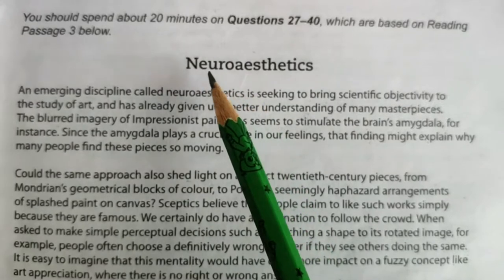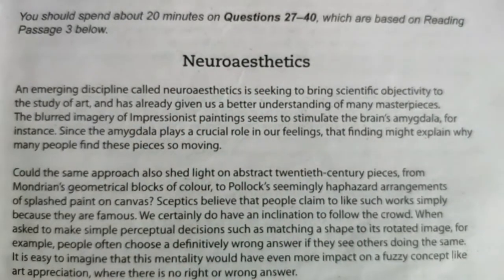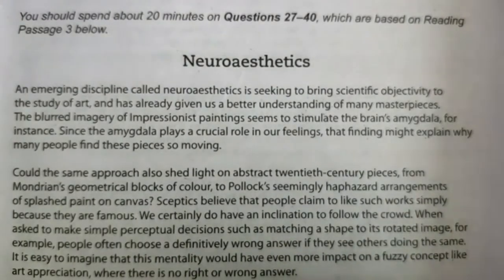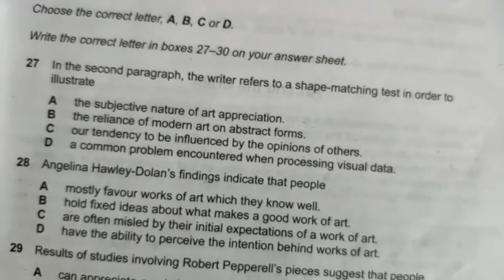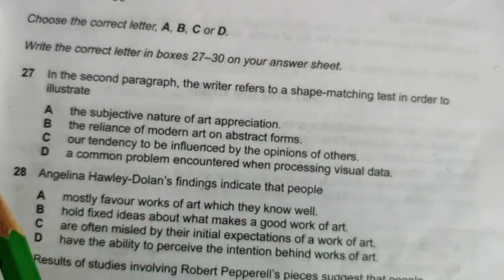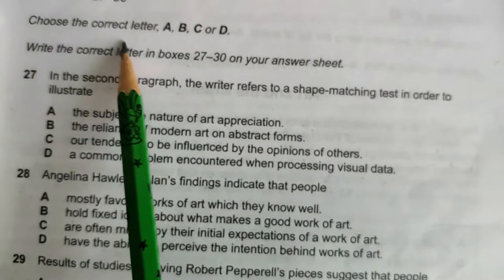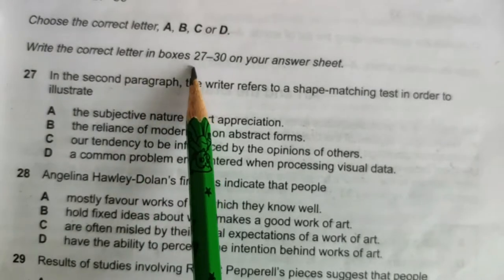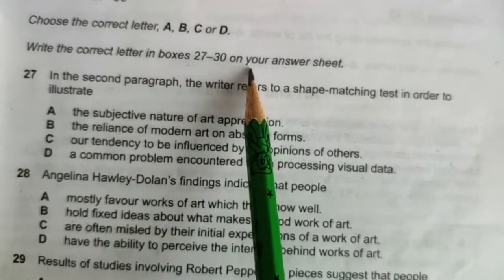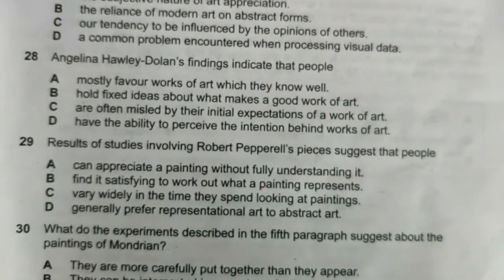The topic is Neuroaesthetics. Always read the topic of the passage first. Now look at the questions before reading the whole passage. Questions 27 to 30 are MCQ — multiple choice questions. Choose the correct letter A, B, C, or D and write it in boxes 27 to 30 on your answer sheet.